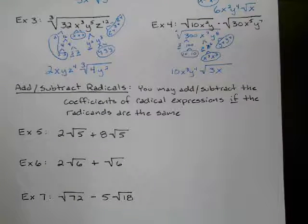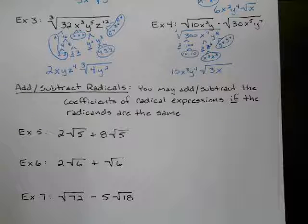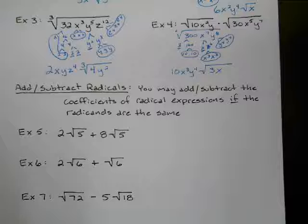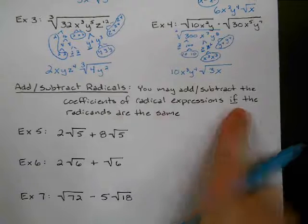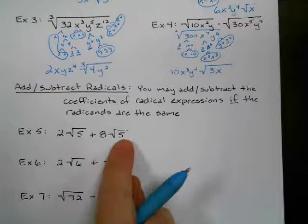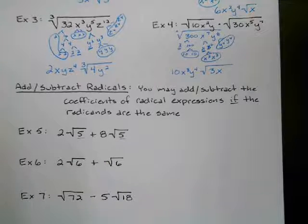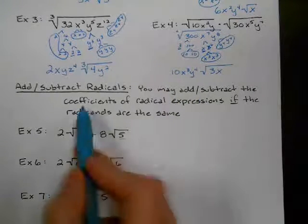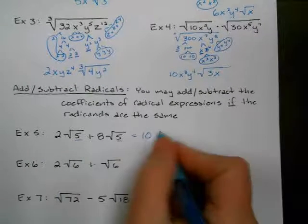All right. Adding and subtracting radicals. Okay, so radicals kind of behave like variables. Like if you have a like term, you can only combine x's with other x's, right? When you're adding and subtracting. That's the same thing with radicals. You can only add and subtract the coefficients if the radicands are the same. So the radicands are the numbers in the radicals. So on this one, the radicands are the same. They're both 5. So that means I can add and subtract the coefficients. So I can just do 2 plus 8, which is 10.